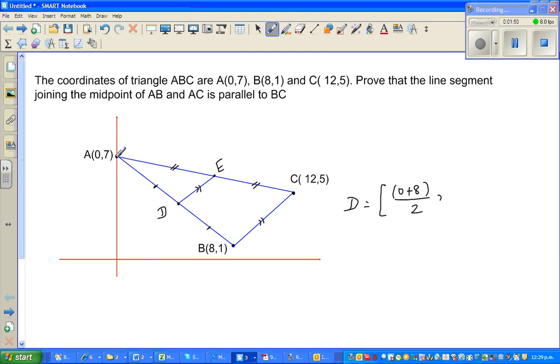The same logic applies for the y-coordinate. You add the y-coordinates and divide it by 2. That is 7 plus 1 over 2. So this is the midpoint, which is 4 comma 4. So this point is 4 comma 4.